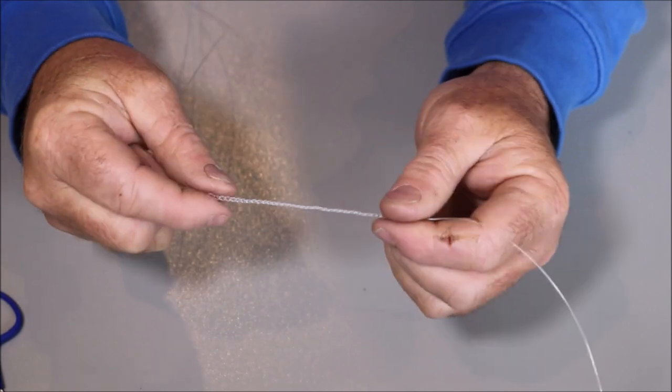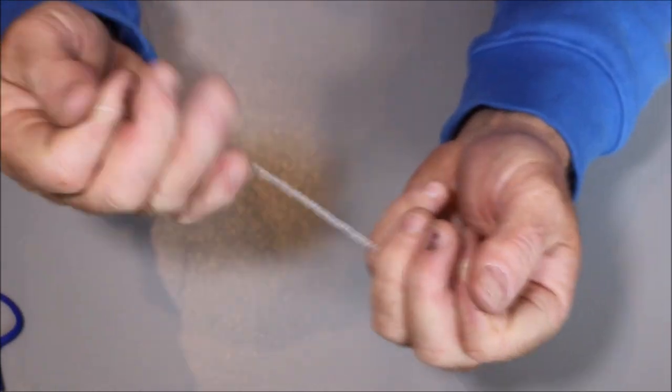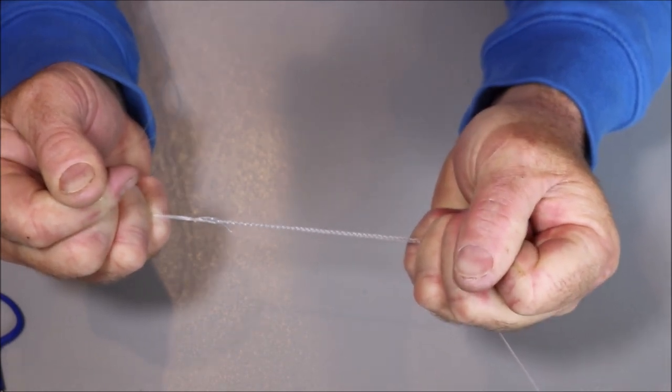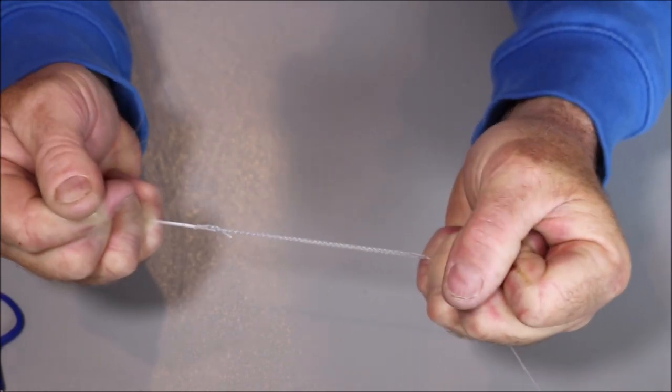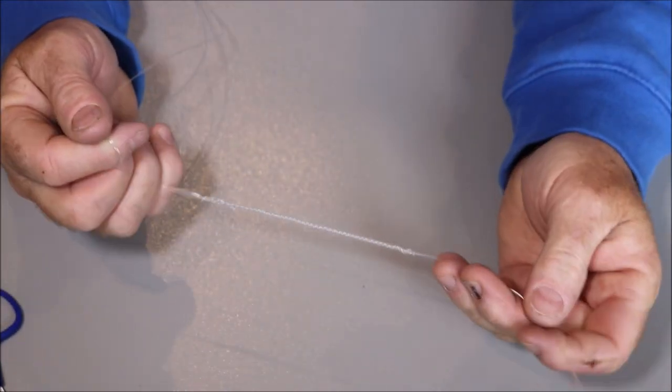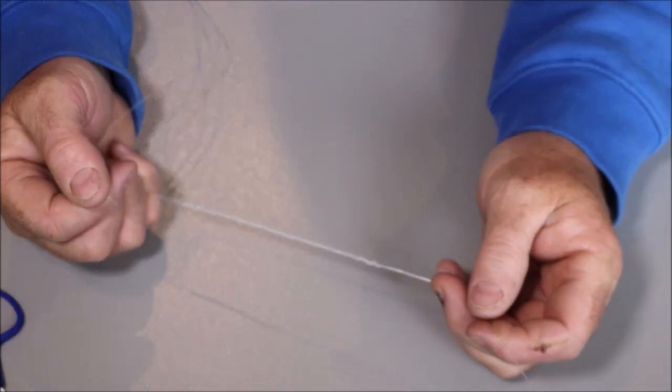And as you can see, if you pull on that, there's actually some spring there. You can see it's springing. It just gives you that little bit extra shock absorption. Works quite nicely. So there you have a simple plaited double.